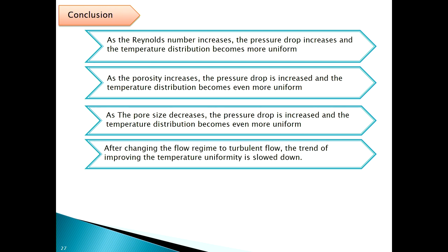Some concluding remarks: as Reynolds number increases, the pressure drop increases and the temperature distribution becomes more uniform. As pore size decreases, the pressure drop increases and the temperature distribution becomes even more uniform. The pressure drop increases while uniformity also increases — one effect is beneficial, the other is not. Finally, after changing the flow regime to turbulent, we showed that the trend of improving temperature uniformity is slowed down. Thank you for your attention.